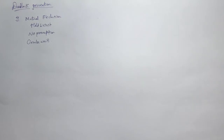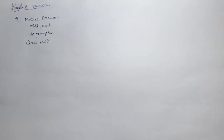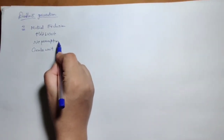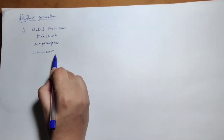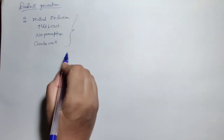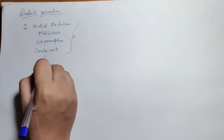Hi students, in today's session we are going to learn how we can prevent deadlock. There are four conditions: mutual exclusion, hold and wait, no preemption, and circular wait. If all four conditions apply simultaneously in the system, then there is a possibility of deadlock.